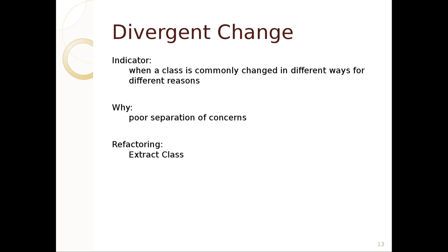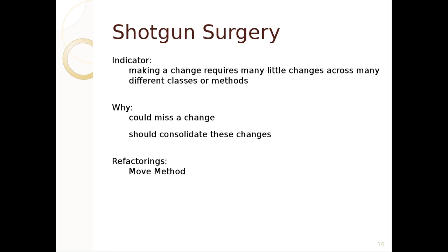Next up is divergent change, which is really about how software slowly evolves. You design a class and it's commonly changed for certain reasons, and over time it goes in multiple directions. What makes a divergent change different from a large class is that it's got distinct separate concerns that have been added to it that you could extract — things like authentication, logging, or handling both GUI and IO at the same time. The general solution is to extract a class.